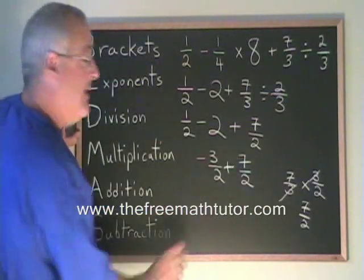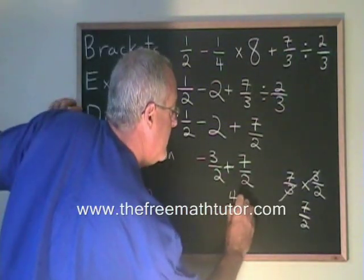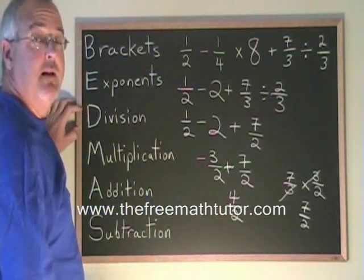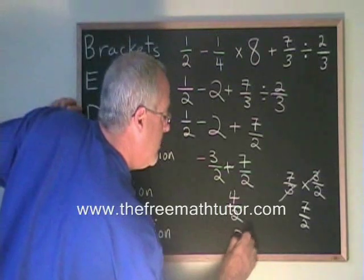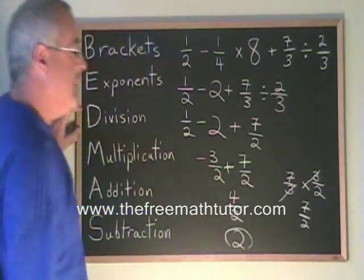Negative 3/2 plus 7/2 is 4/2. We are finished, except that we want to simplify our answer. 4/2 is equal to 2. Our answer is 2.